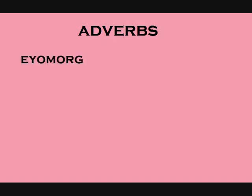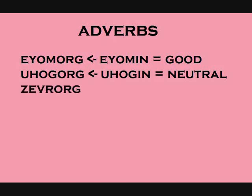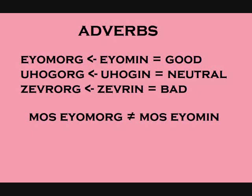Unlike the first review, there is some new material here, so skipping this video is not recommended. First, the adverbs introduced in the second lesson are all derived from adjectives: 'eomorg' (well) comes from 'eomin' (good), 'uhogorg' (neutrally) comes from 'uhogen' (neutral), and 'zevror' (poorly) comes from 'zevrin' (bad). Note that 'mos eomorg' and 'mos eomin' mean very different things — as an adverb, 'eomorg' refers to the verb, the manner in which you are being; as an adjective, 'eomin' refers to the subject, saying you are a good person.